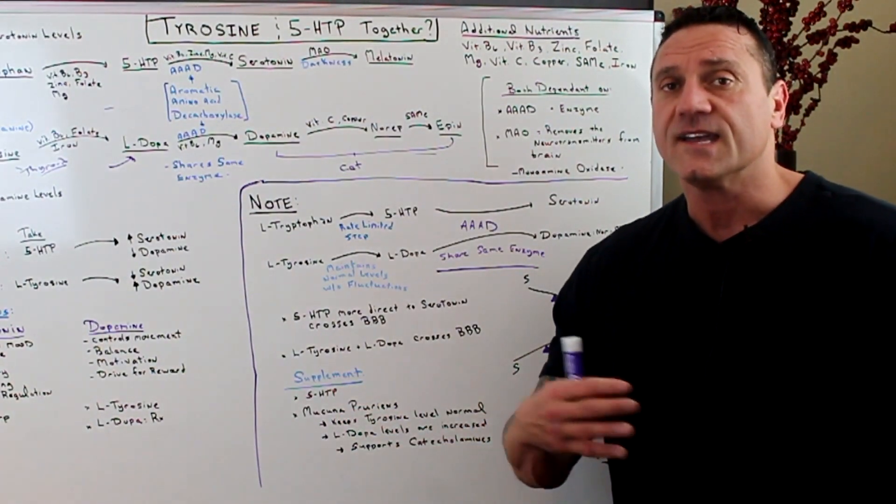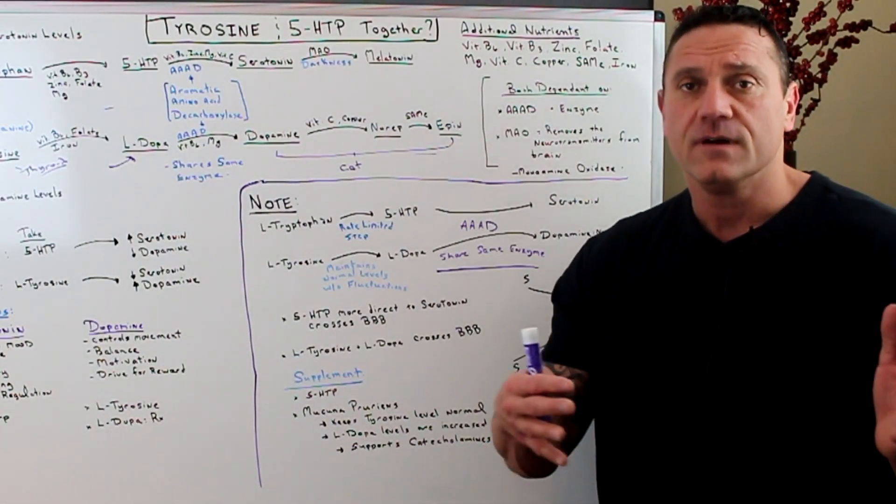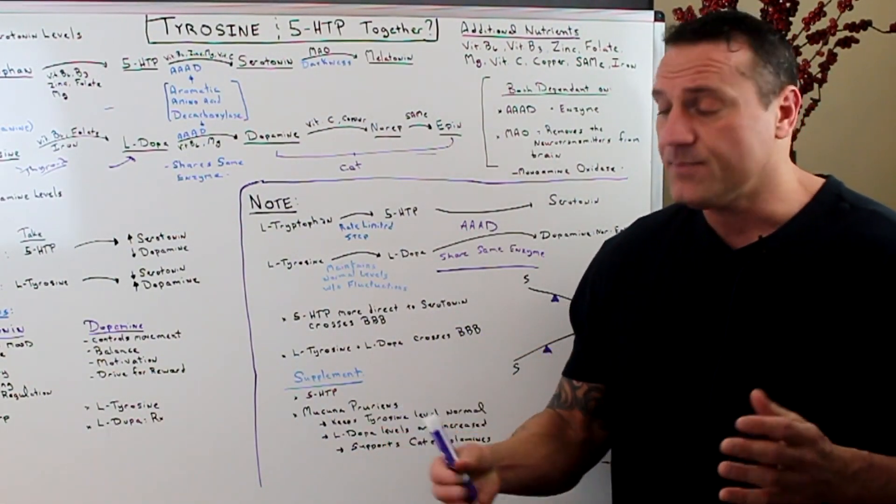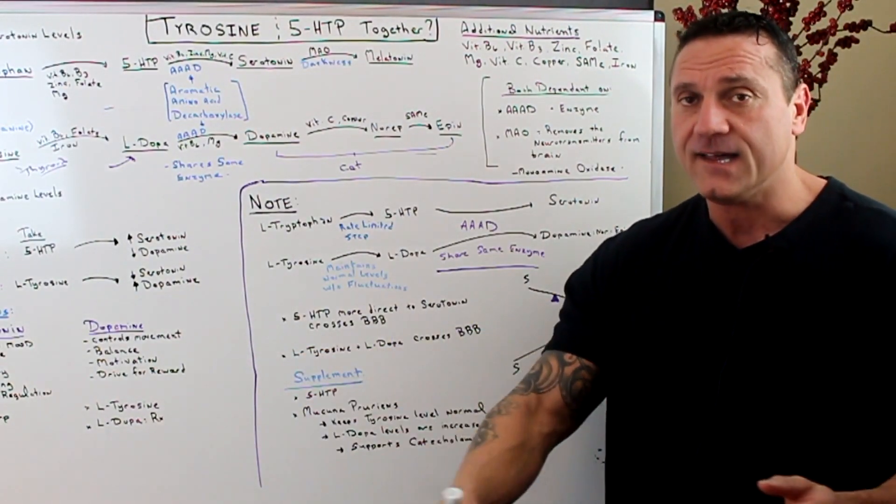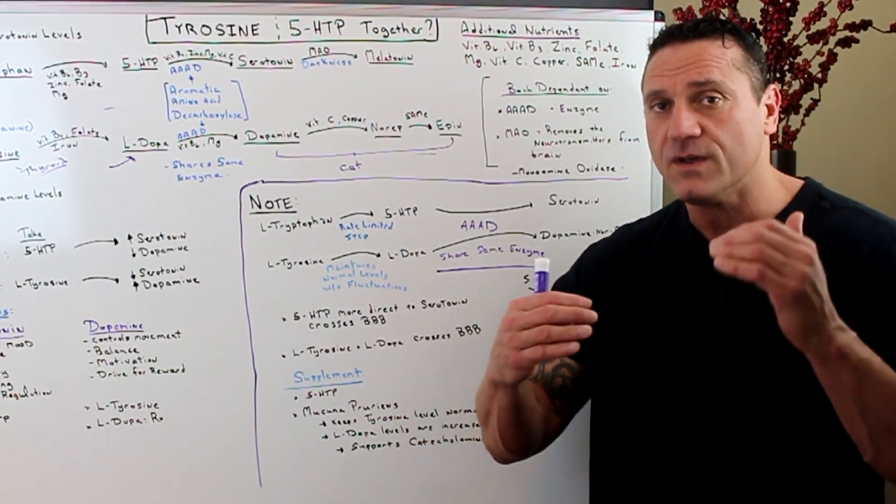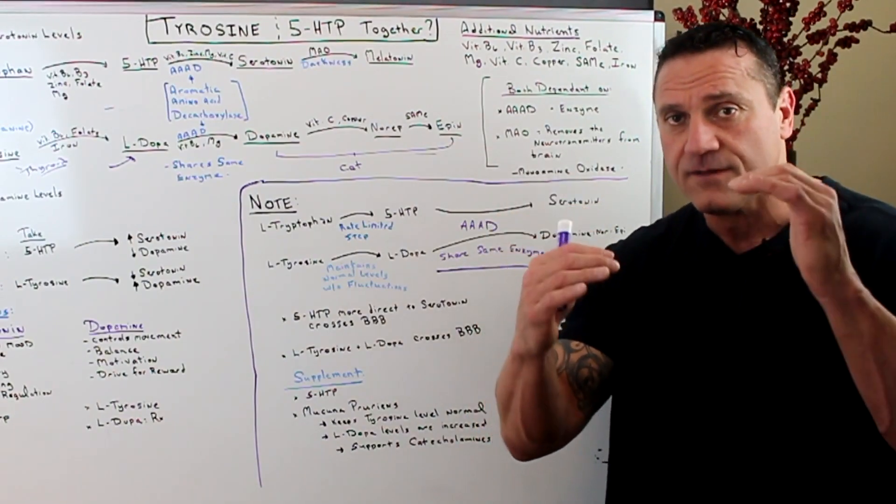One is control mood, anxiety, hunger, sleep. Dopamine, again, controls movement, balance, mood as well. So you want to be careful not to throw it off too much.